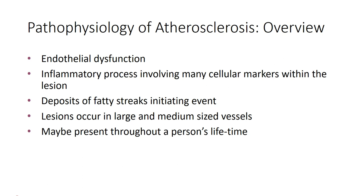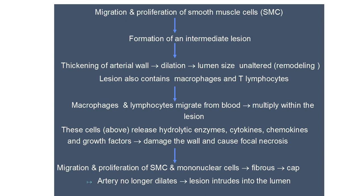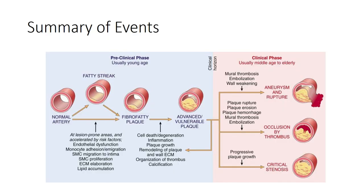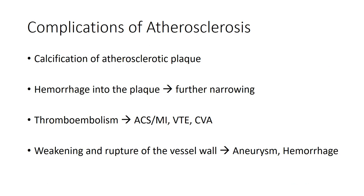To summarize the pathophysiology: endothelial dysfunction sets the stage — it's an inflammatory process involving many cellular markers. We develop fatty streaks, created by foam cells which are modified LDL engulfed by monocytes. These lesions develop if lifestyle factors aren't addressed, and may be present as early as your 20s. Interestingly, atherosclerosis appears unique to humans and has even been observed in mummies. We'll wrap up this section and move on to the complications that may arise from atherosclerosis.